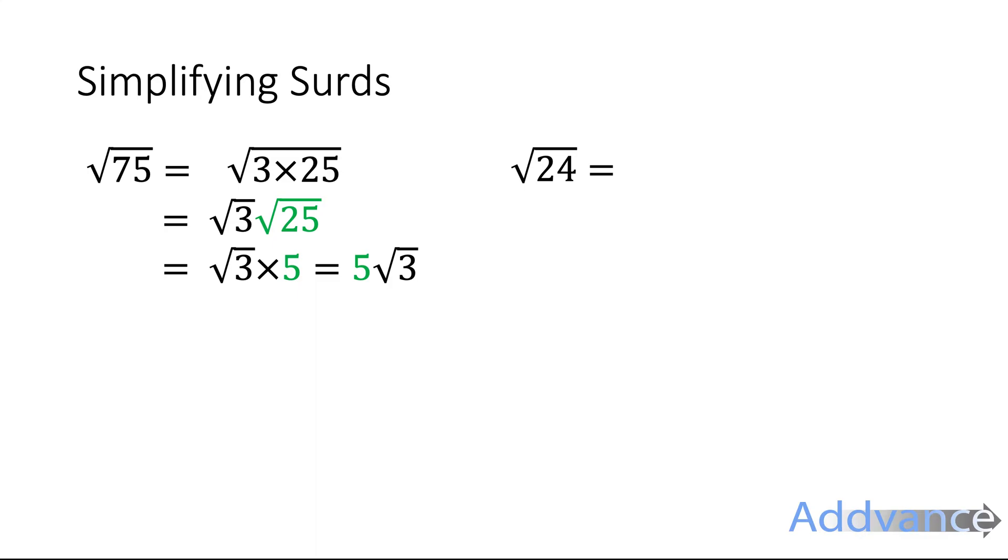For the square root of 24, that's the square root of 6 times the square root of 4, where the 4 is a square number, so it works. So it's the square root of 6 times 2. That is the final answer. We have simplified these surds. Let's continue.